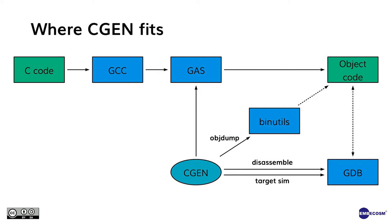LibOpCodes captures the syntactic structure of the instruction set architecture. It is used to form the heart of the table-driven assembler and disassembler. The remaining components are largely generic, which means once the LibOpCodes has been created or updated, you have a working GNU assembler and disassembler. The disassembler can be used via the -d option to objdump or via the disassembly command in GDB. LibSim captures the semantic structure of the instruction set architecture and forms the heart of the table-driven functional instruction set simulator. The simulator can be used standalone or invoked with GDB using the target sim command.